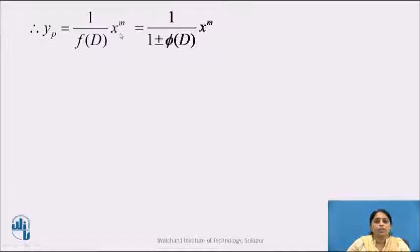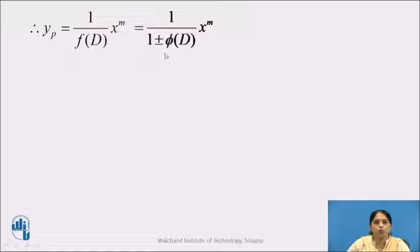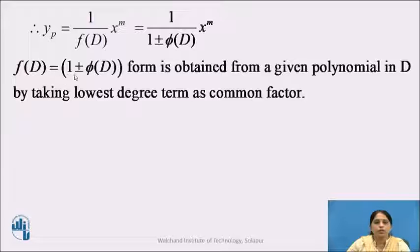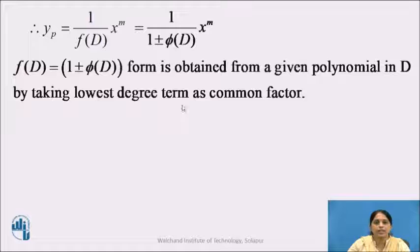We will express f(D) as 1 plus or minus phi(D), so that yp equals 1 upon (1 ± phi(D)) into x raised to m. This f(D) = 1 ± phi(D) form is obtained from the given polynomial in D by taking the lowest degree term as common factor.